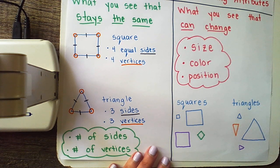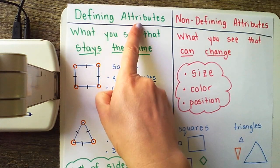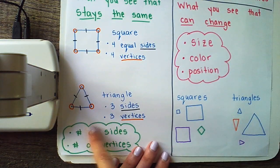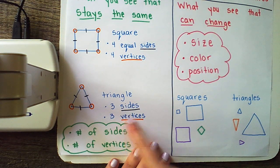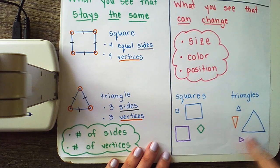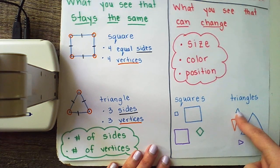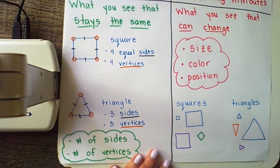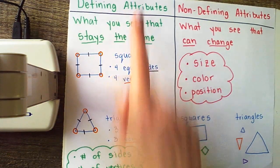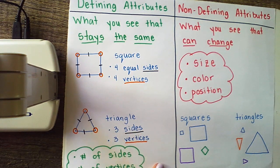Same with our group of triangles. I know all of these are triangles because my defining attributes of triangles are the number of sides — three — and the number of vertices — three. All of these shapes over here have three sides and three vertices. It doesn't matter that we have a small one and a big one. It doesn't matter that some are orange, some are blue, some are purple. It doesn't matter that some of them are turned sideways. I know a triangle is a triangle because its defining attributes are that it has three sides and three vertices.